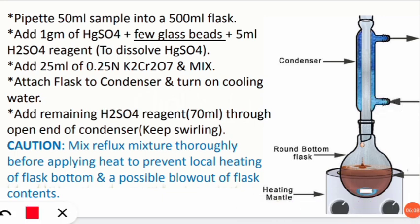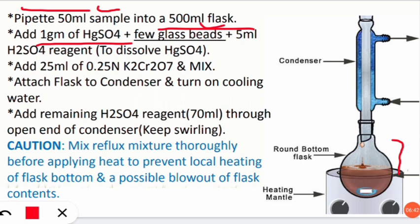For the COD procedure, first pipette out 50 ml of the water sample to be analyzed into a 500 ml round bottom flask. Then add 1 gram of HgSO₄ — mercury sulfate in powdered form. Next, add a few glass beads. Glass beads are very important because they prevent bumping, which is the formation of superheated bubbles that may explode violently when heat is applied.